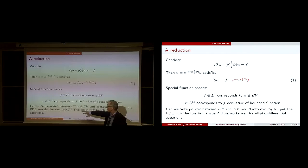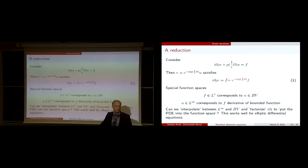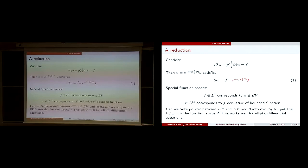Certainly U in L^∞ or continuous bounded functions also play a special role. The guiding question is: can we interpolate between L^∞ and bounded variation, and sort of factorize the operator to put the PDE into a function space? This is basically what works for elliptic PDEs — you can put basically all the information into the function space.